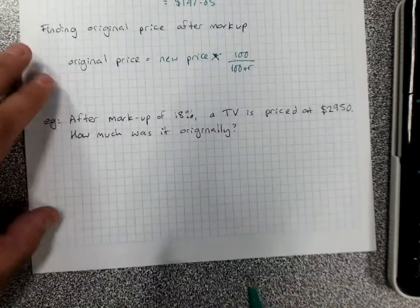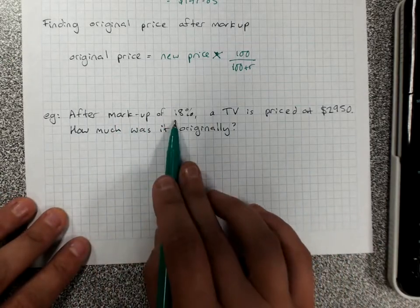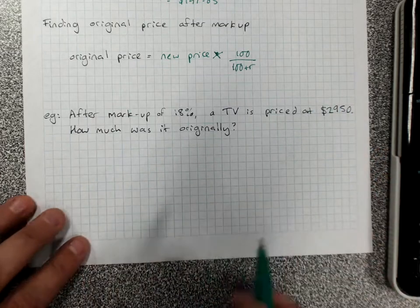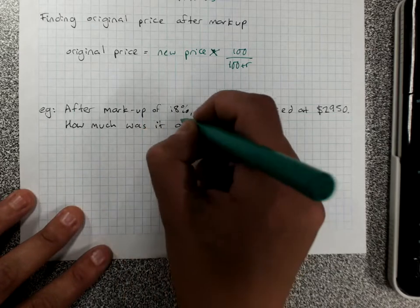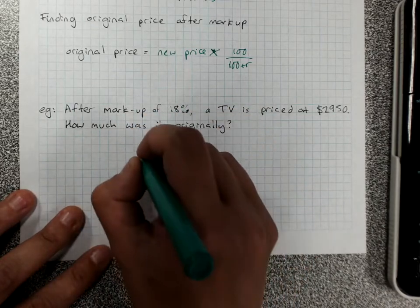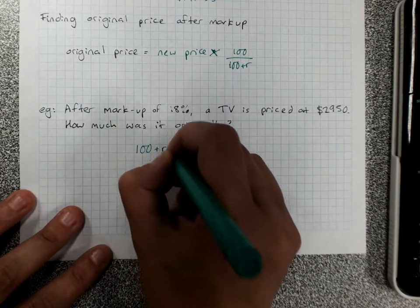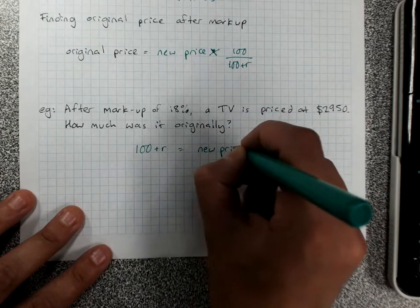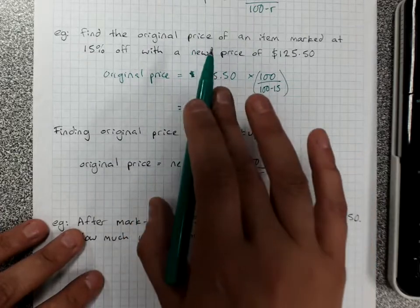Your other option is being a little bit more logical. After a markup of 18%, a TV is priced at this. How much was it originally? We can set up an equation. A markup of 18% means 100% plus 18%, so we can do our 100 plus R equals the new price. Or it'd be 100 minus R if we were doing it for a discount.